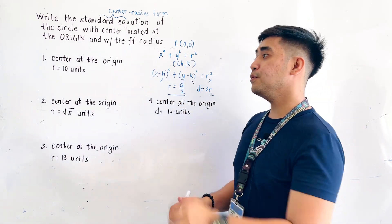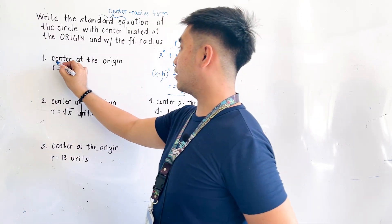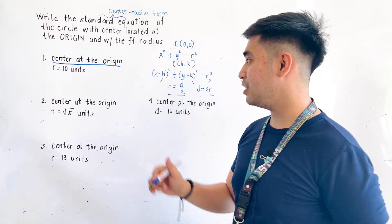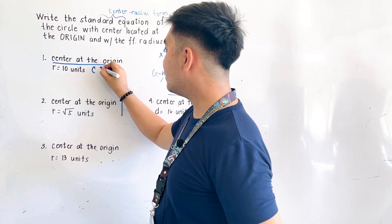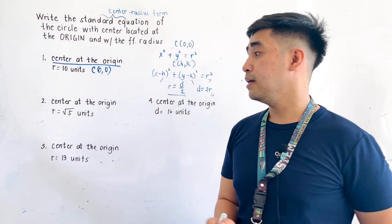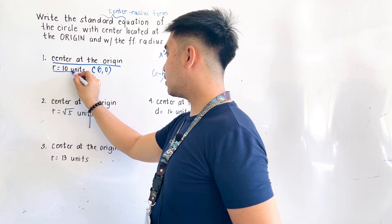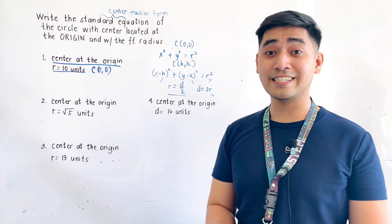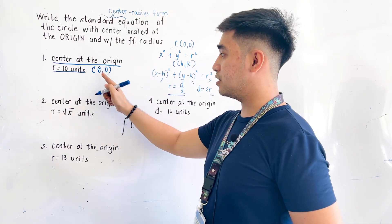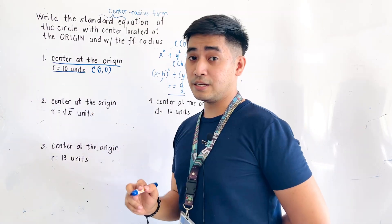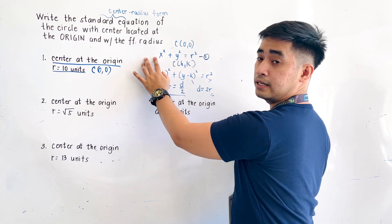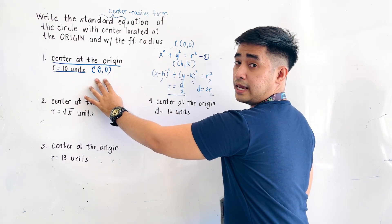For the first problem, we are given the center at the origin, located at point (0, 0), and the radius is 10 units. Since the center is at the origin, there is no H or K. We will use the equation x squared plus y squared is equal to r squared. Substituting, x squared plus y squared is equal to r squared, where r is 10.